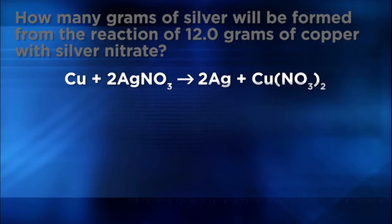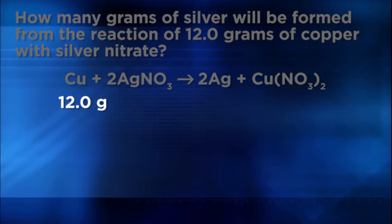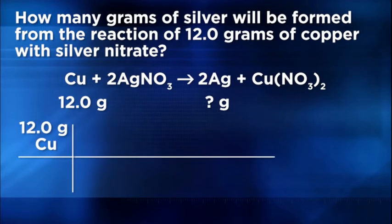We already have a balanced equation, and in this problem we're given the mass of copper that's going to be used in the reaction, and the problem asks us to solve for the amount of silver that will be produced in grams. So we'll place 12.0 grams of copper in the upper left-hand corner of the conversion chart, since that information was given to me.